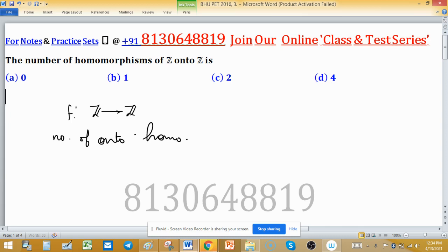Onto homomorphism - it is clearly understood by the word 'onto' we are interested to find homomorphism from this to this point. We know that Z is generated by two elements: one and minus one.